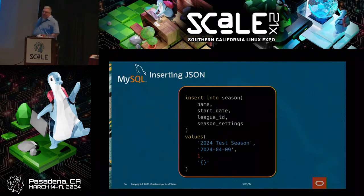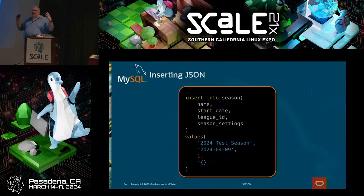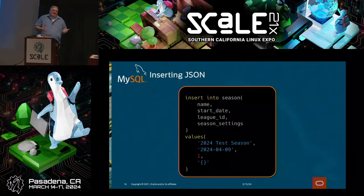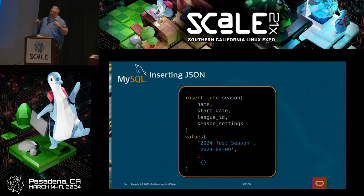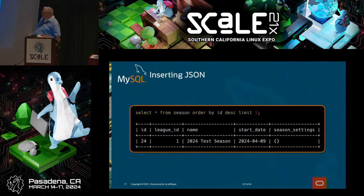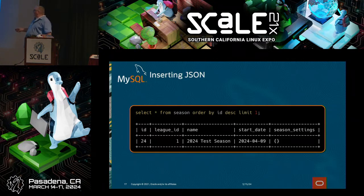When inserting JSON, remember — at its basis, what is JSON? It's a string. So we can just insert it as if it's a string, just like we would any other string. Whether you're using a JSON object, a JSON string, or somebody's first name, we can just do an INSERT surrounded by single quotes. If we do SELECT * FROM season ORDER BY ID DESC LIMIT 1, we'll get the latest item, and we'll see the empty object we passed in.